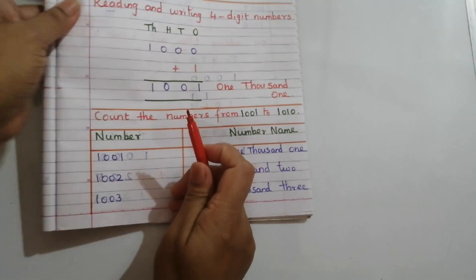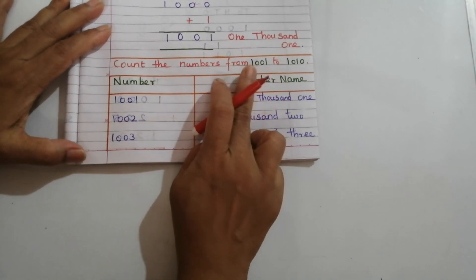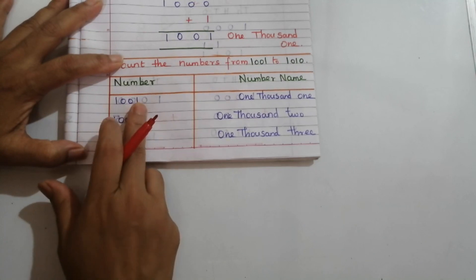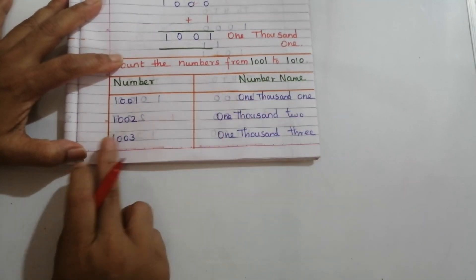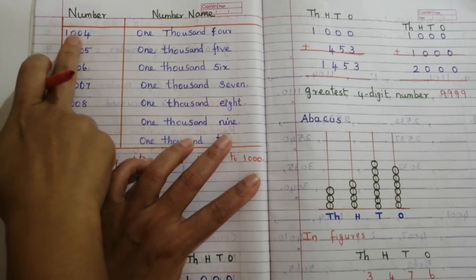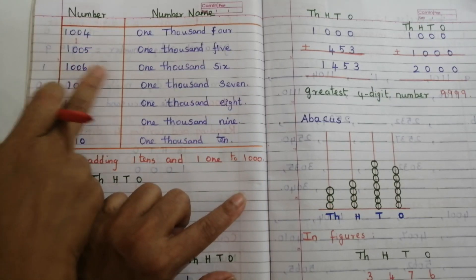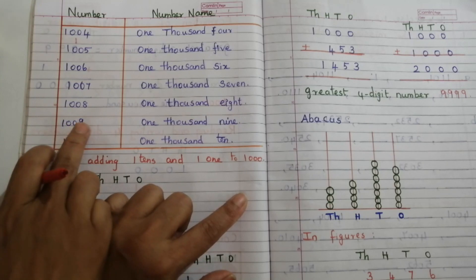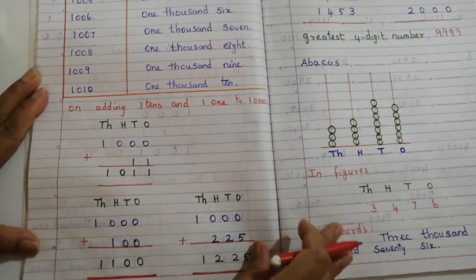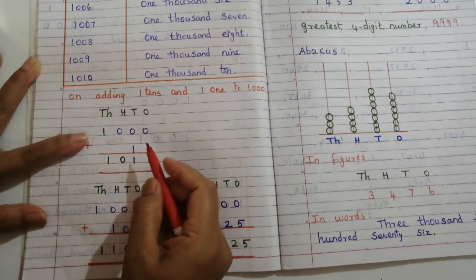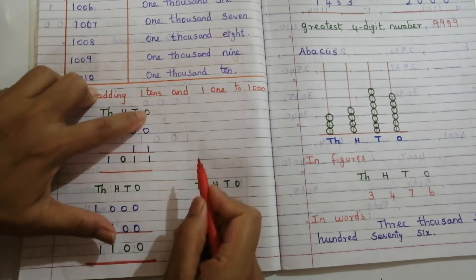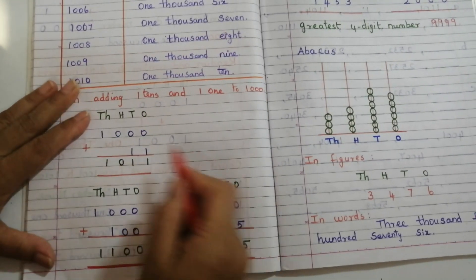Since there are no values in hundreds and tens, we read 1001 as 'one thousand one.' Next, counting the numbers from one thousand one to one thousand ten: 1001, 1002, 1003, 1004, 1005, 1006, 1007, 1008, 1009, and 1010.